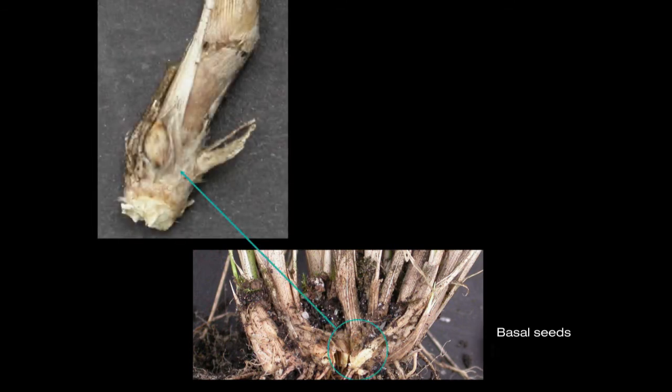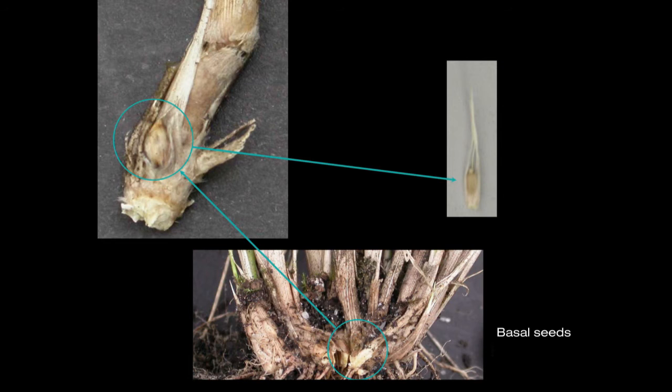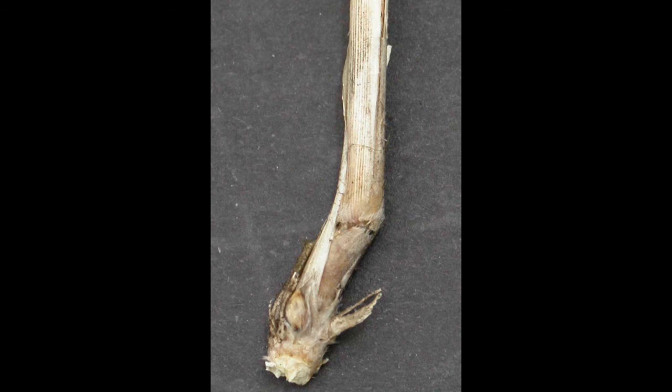Basal seeds can occur on any number of stems, can mature at almost any time of year, and are released when the plant dies and decomposes. Native grasses that are most typically mistaken for CNG do not produce basal seeds, and therefore this can be a useful way of confirming that you are dealing with needle grass.